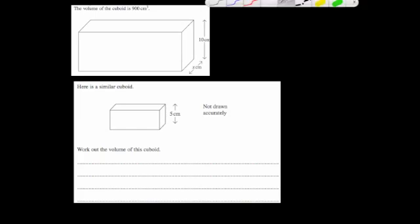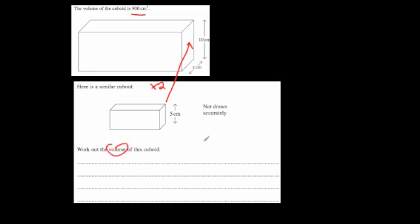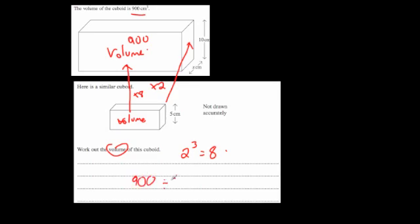We have a larger cube with a volume of 900 centimeters cubed and a height of 10 centimeters, and a smaller one where the height is 5 centimeters — we want to find the volume of the smaller one. The scale factor of enlargement for the sides is times by 2, so for the volumes we do 2 cubed which equals 8 times bigger. The larger volume is 900, so we do 900 divided by 8 to get the volume for the smaller one, which equals 112.5 centimeters cubed.